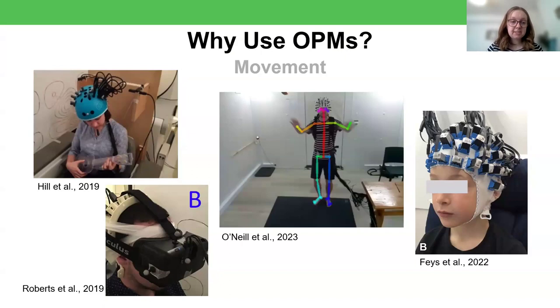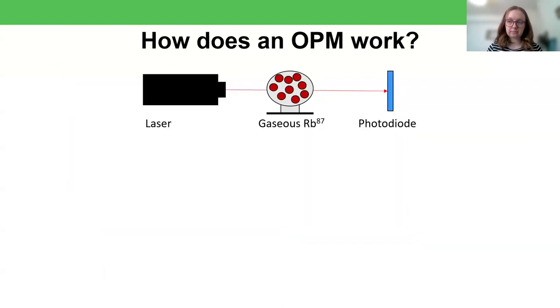Here are some other examples of movement-based experiments. So for example, looking at learning to play, in this case a ukulele, but play an instrument, using VR, dancing in the room, or even recording from patients while they're having a seizure.